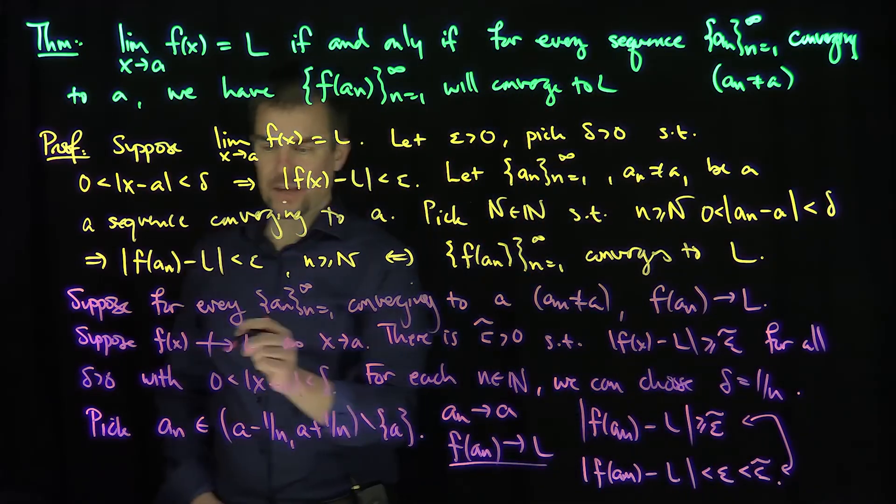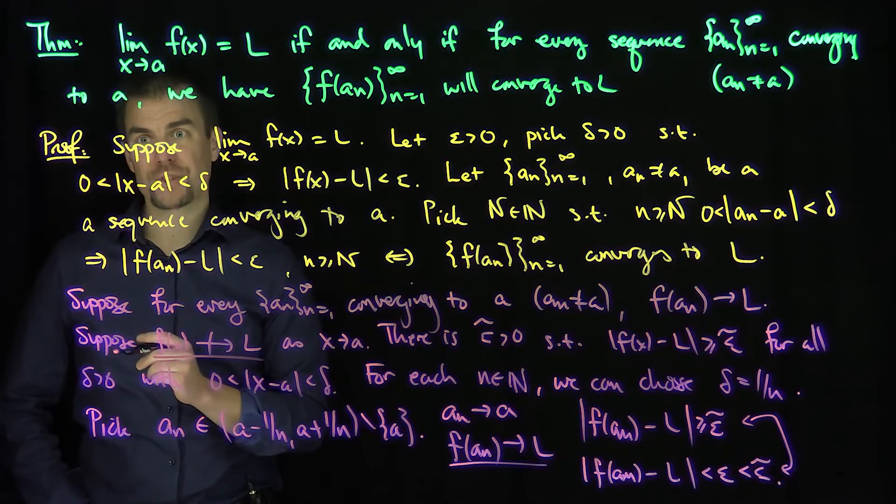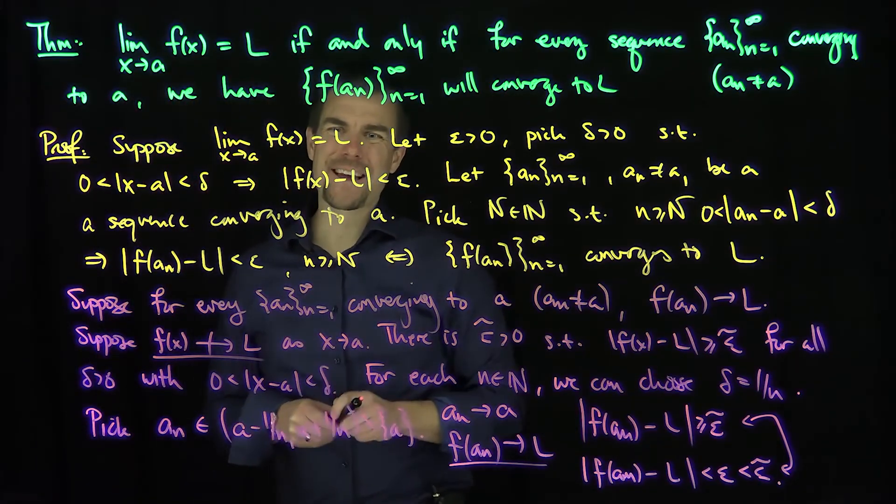And so we have a contradiction which says that it must be the case that f(x) must converge to L as x approaches a. Thank you very much.